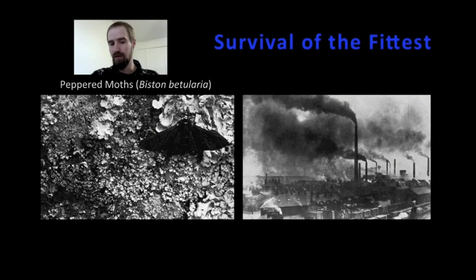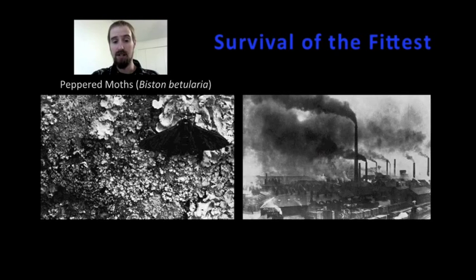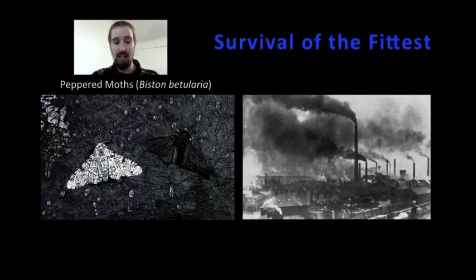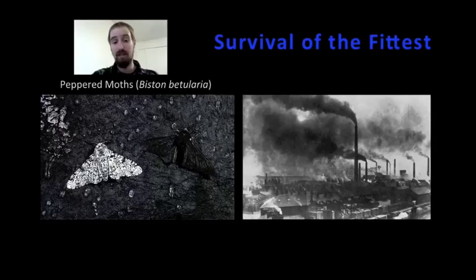That was prior to the Industrial Revolution. As England began to industrialize, the pollution produced by industrial manufacturing began to change the appearance of the landscape. The Industrial Revolution was powered primarily by coal, which is the dirtiest source of energy, especially when technology was less developed and regulations regarding pollution were looser or in some cases completely non-existent. The smoke produced by coal-fired power plants turns everything black, including the bark of the trees. This was a superficial change — the bark wasn't actually turning black on its own, it was just being coated by coal smoke. But it was an important change, especially for the peppered moths.